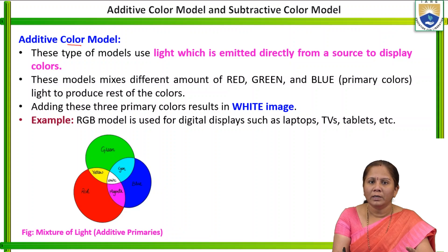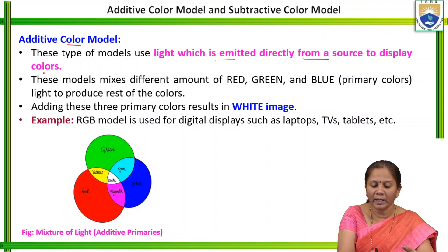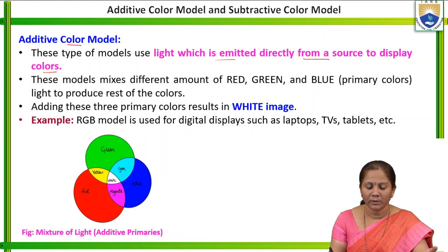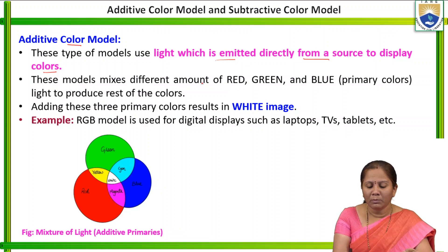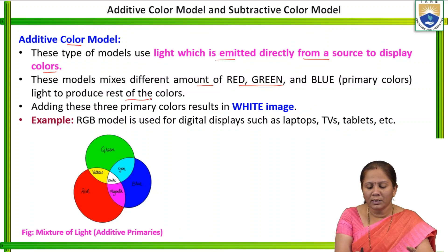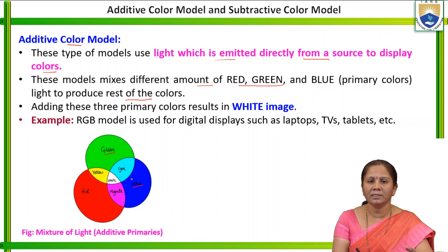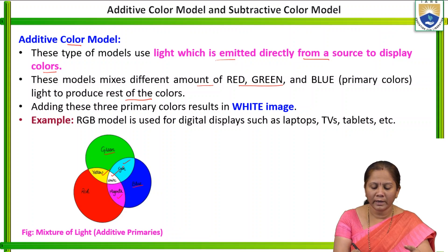Coming to the additive color model — these types of models use light which is emitted directly from the source to display colors. In the subtractive color model, we cannot directly use the light emitted from the source; some modification is needed, and images are generated using ink colors. In the additive color model, different amounts of red, green, and blue — the primary colors — are mixed to produce the rest of the colors.